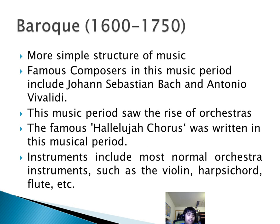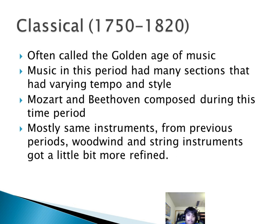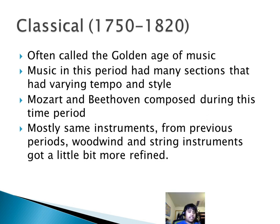Instruments in most Baroque orchestras included the violin, the harpsichord, the flute, and similar instruments. The classical period, from 1750 to 1820, is often called the golden age of music. Music in this period had many sections with varying tempo and style — you could go from a slower tempo section and quickly switch to a very fast one.